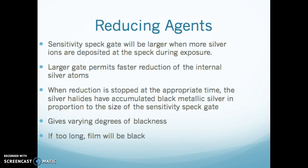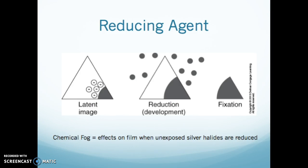The sensitivity speck gate will be larger when more silver ions are deposited at the speck during exposure. A larger gate permits faster reduction of the internal silver ions. When reduction is stopped at the appropriate time, the silver highlights have accumulated black metallic silver in proportion to the size of the sensitivity speck gate, giving varying degrees of blackness. If development is too long, the film will be black; if too short, it'll be light. The latent image is put through the processor in development and then fixed on the film.